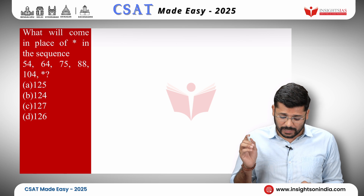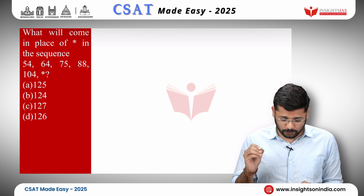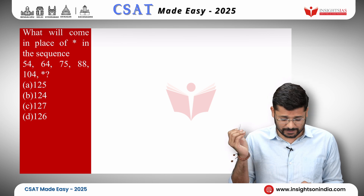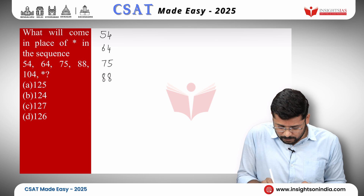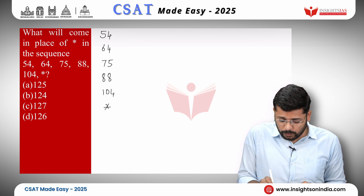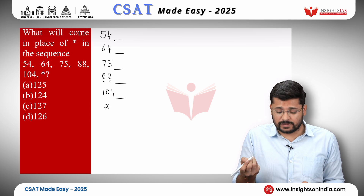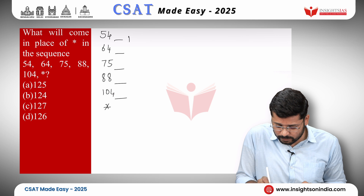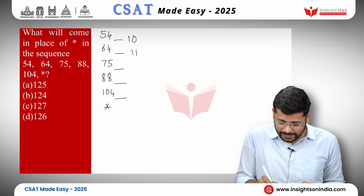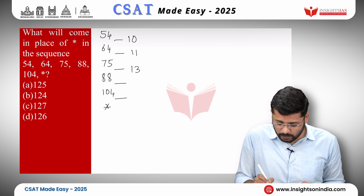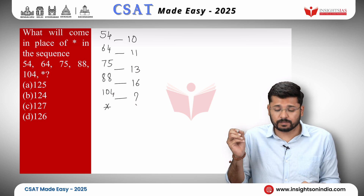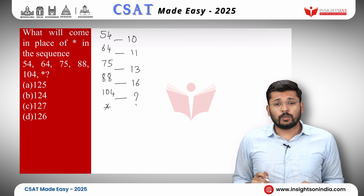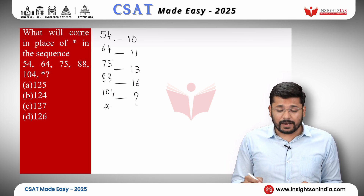Next question: what will come in place of asterisk in the sequence 54, 64, 75, 88, 104, *? Write the numbers in vertical order, then take the differences: 64 minus 54 is 10, 75 minus 64 is 11, 88 minus 75 is 13, and 104 minus 88 is 16. We do not know what comes next, and we are unable to make any pattern from these differences alone.